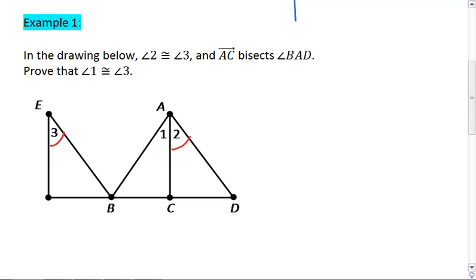We also know that ray AC bisects angle BAD. I'm going to switch colors here. Because AC bisects angle BAD, we know that angle 1 is congruent to angle 2. We want to prove that angle 1 is congruent to angle 3.